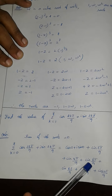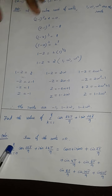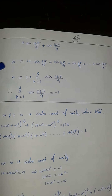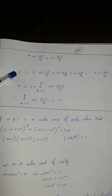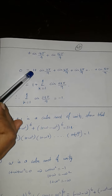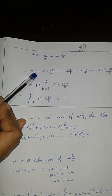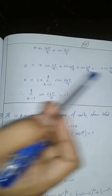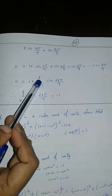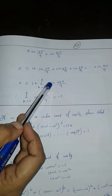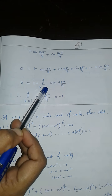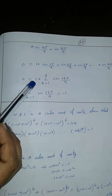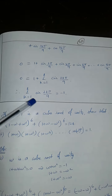Continuing: 2kπ/9 for k=2 gives 4π/9, for k=3 gives 6π/9, and so on up to k=8. Since the sum of all roots from 0 to 8 is equal to 0, and the k=0 term gives cos(0) plus i·sin(0) equal to 1, the sum from k=1 to 8 is equal to minus 1. This is what we prove.